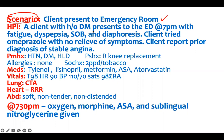A client with a history of diabetes presents to the emergency room at 7 p.m. with fatigue, dyspepsia, shortness of breath, and diaphoresis. The client tried omeprazole with no relief of symptoms, and has a prior diagnosis of stable angina. Something should be ringing in your ear — a diabetic patient with shortness of breath, diaphoresis, dyspepsia, and fatigue: this is not hypoglycemia. Fatigue, dyspepsia, shortness of breath, and diaphoresis indicate MI.